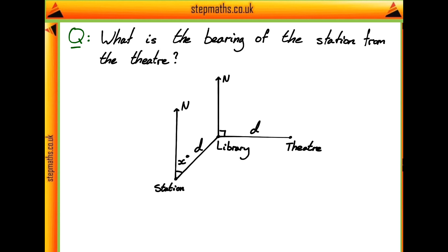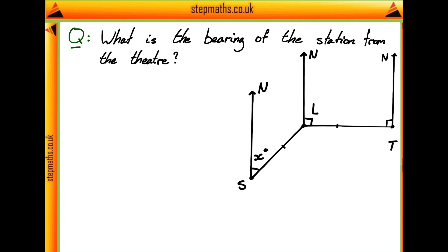So what we're asked to do is to find the bearing of the station from the theatre. To try and answer this question, the first thing I'm going to do is think about what this bearing of the station from the theatre actually is. I've labelled north at our theatre here because we're doing a bearing about the theatre, because it's going to be from the theatre to the station.